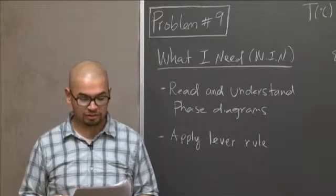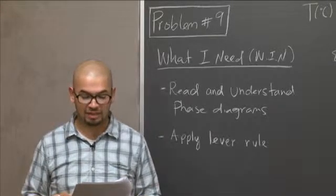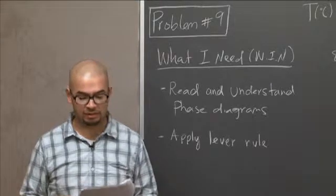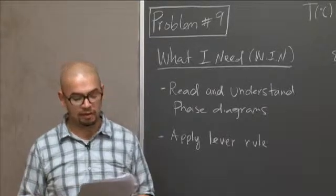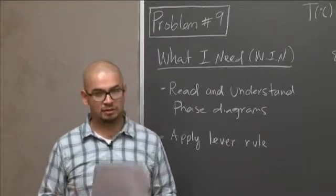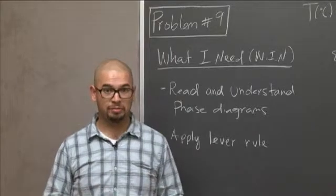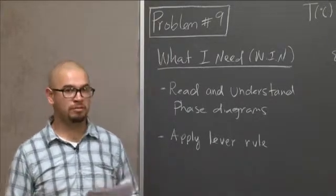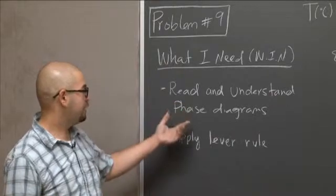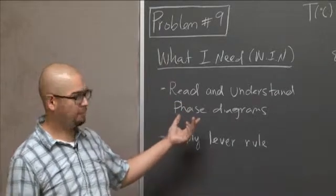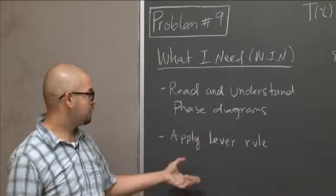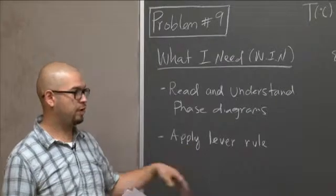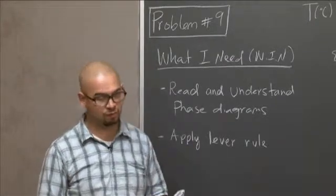There are two allotropes: alpha, which is hexagonal close pack (HCP), and beta, which is body centered cubic (BCC). This problem is obviously about phase diagrams, so before you attempt to solve it, you need to make sure that you understand how to read phase diagrams, how to apply the lever rule, and know where in the phase diagram to apply the lever rule.